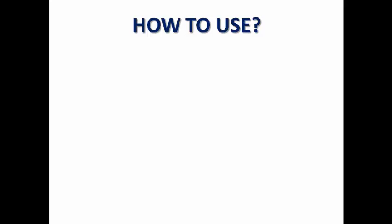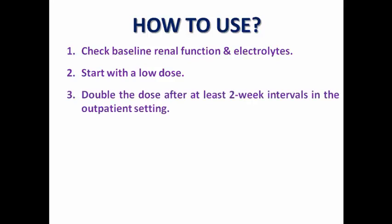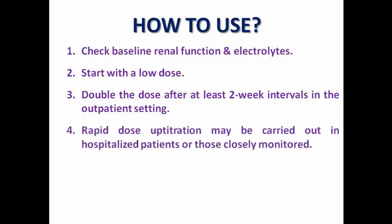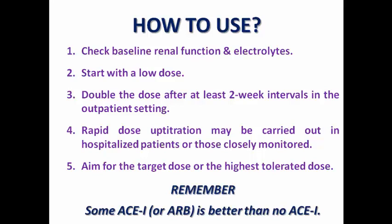How to use ACE inhibitors: first, obtain baseline renal function and electrolytes including BUN, creatinine, sodium, and potassium. Start with a low dose to avoid side effects, then double the dose after at least two-week intervals in the outpatient setting. Rapid dose up-titration may be performed in a hospitalized patient with close monitoring. Aim for the target dose or the highest tolerated dose according to patient symptoms and blood pressure. Remember that some ACE inhibitor or ARB is better than none at all.